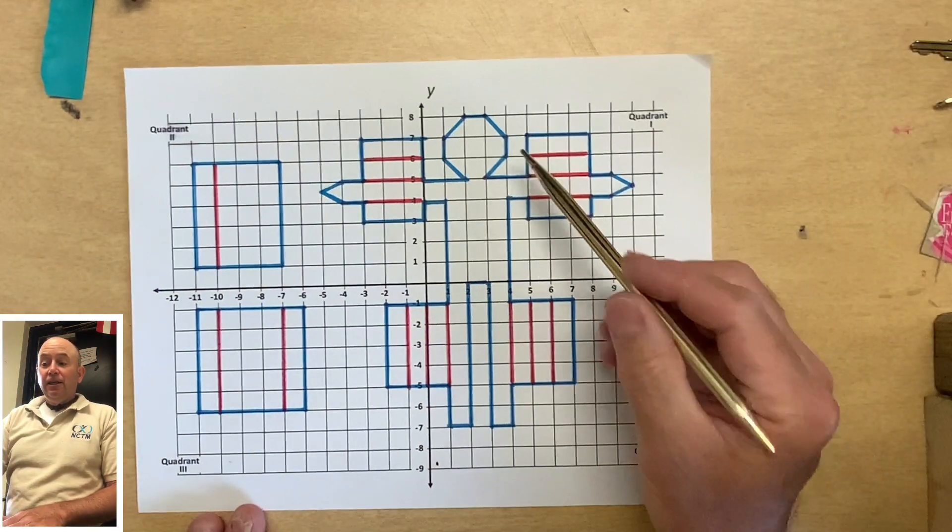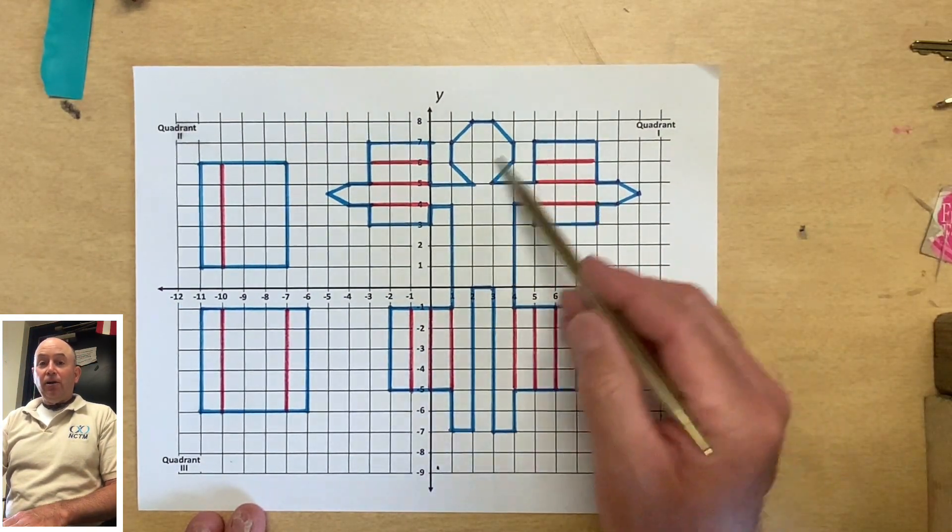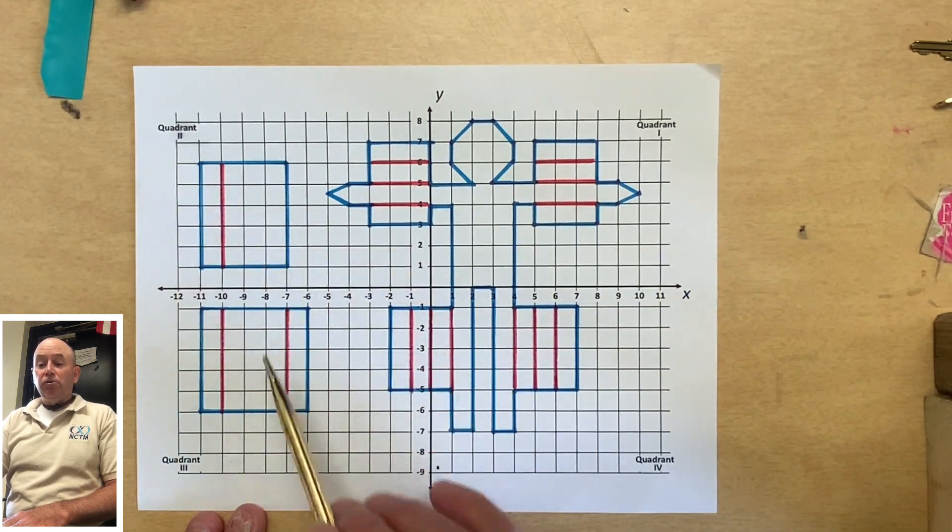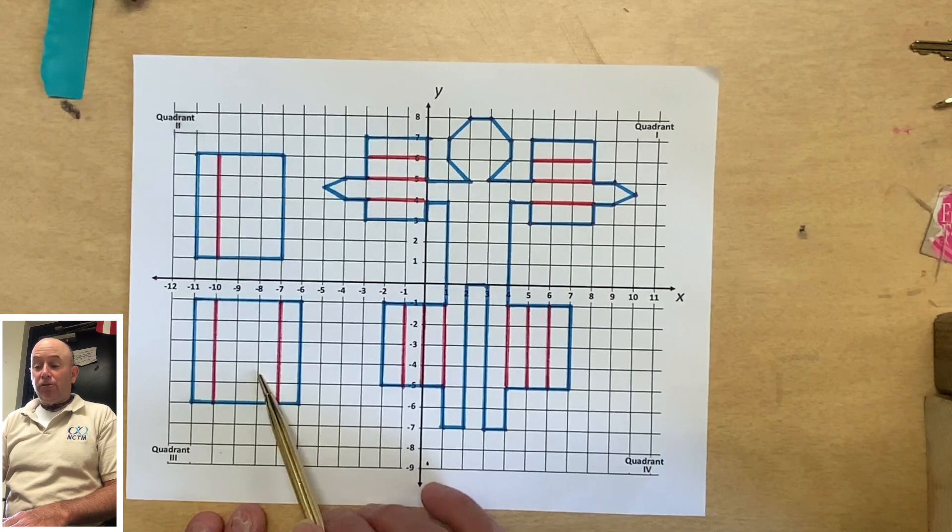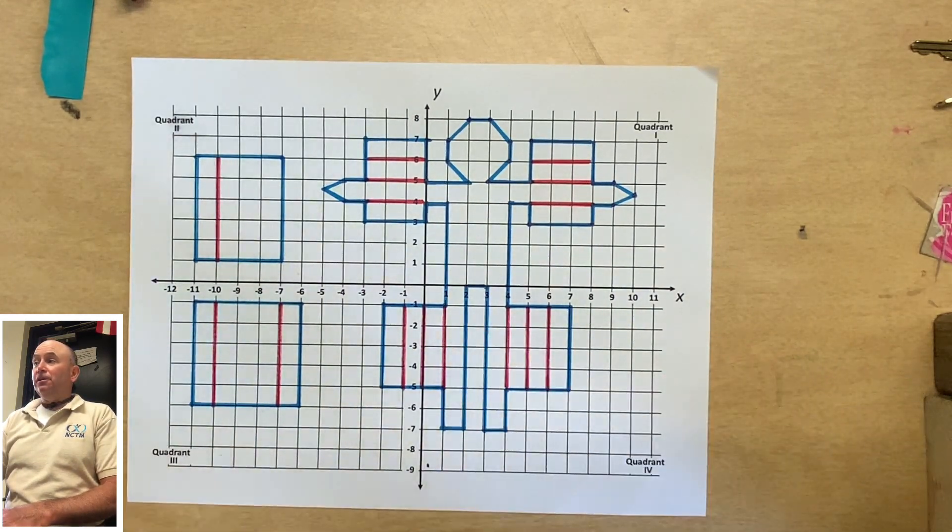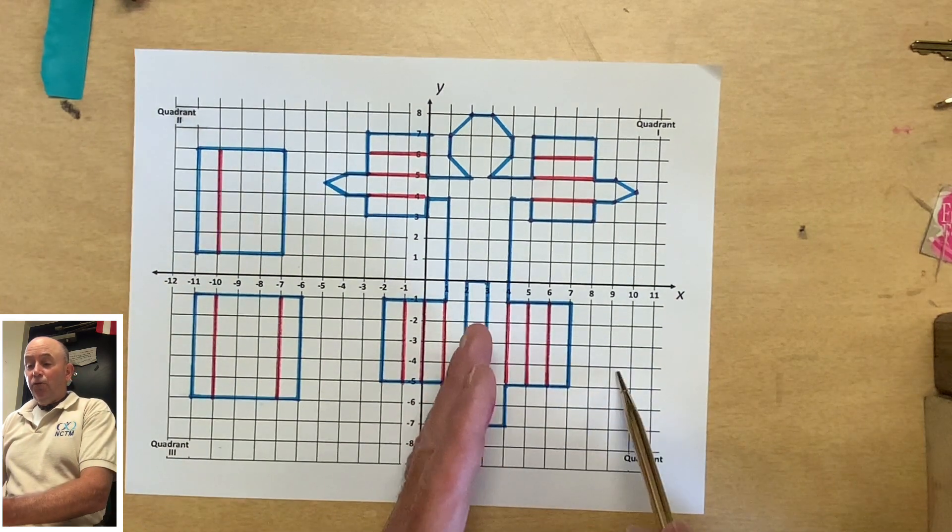Notice that his head and his body are in quadrant one. Parts of his torso are in quadrant two and quadrant three. His legs and feet are primarily in quadrant four.